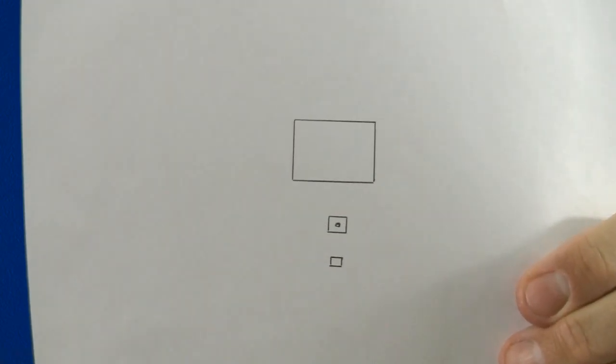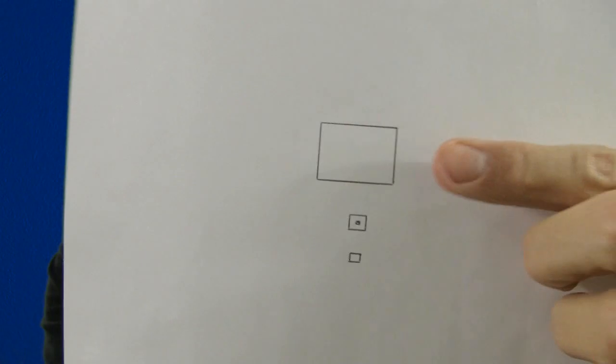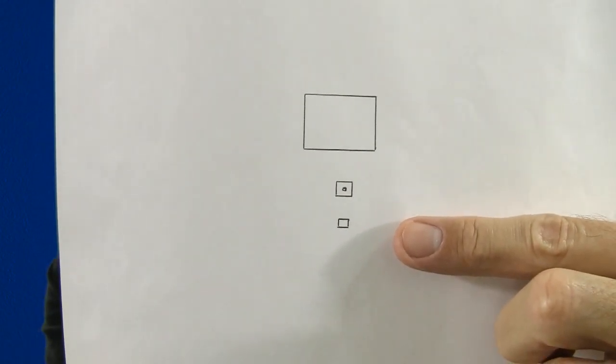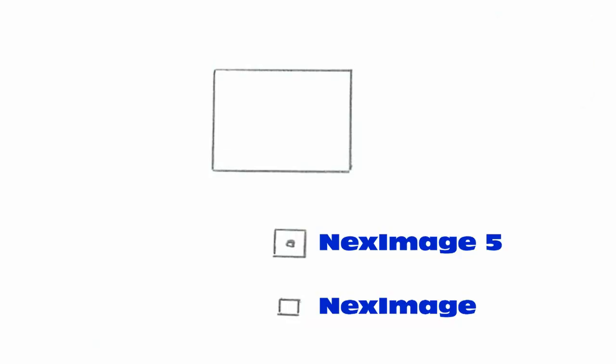For comparison, I've drawn three rectangles the size of the chips of the three cameras I just talked about. This is the Starshoot Pro, the NexImage 5, and the original NexImage. Notice I have drawn a tiny rectangle inside the one for the new NexImage. This is how much is being used when in the 640 by 480 mode. This is two and a half times smaller than the older NexImage, which has 640 by 480 pixels altogether.